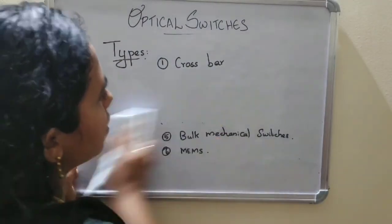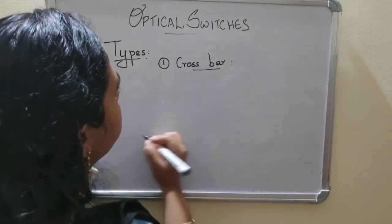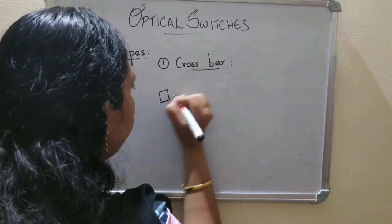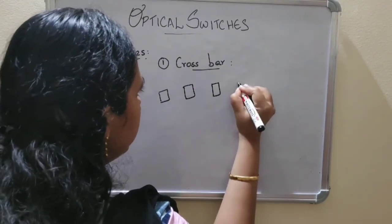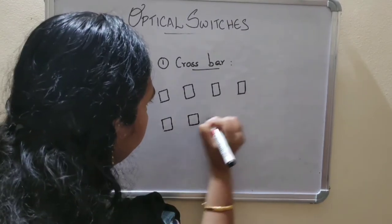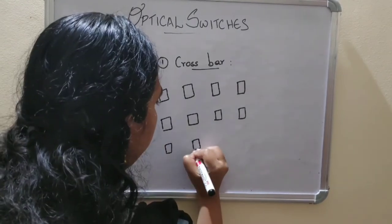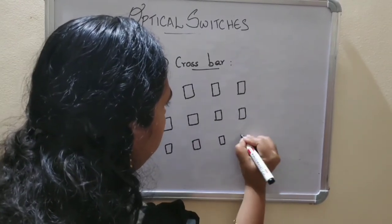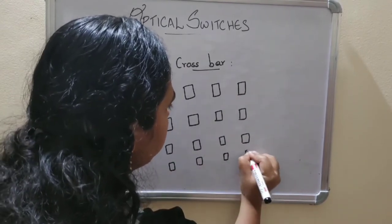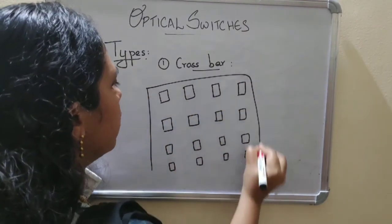First we are going to discuss about Crossbar. Crossbar has one diagram. Normally in Crossbar, 4-cross-4 switches are used. This all are switches — this is the switchboard.